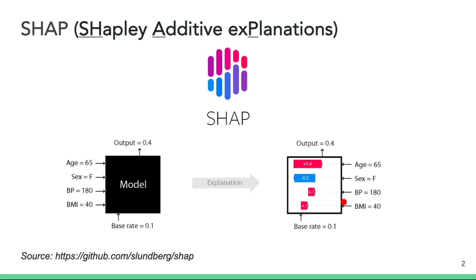By direction, we mean the presence of the feature supports or contradicts the prediction. By magnitude, we're referring to the size of the influence that each feature has.